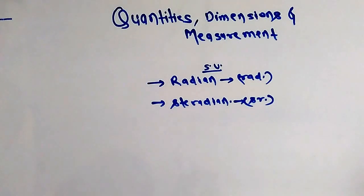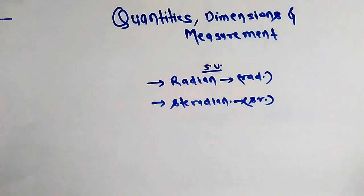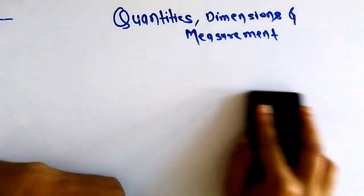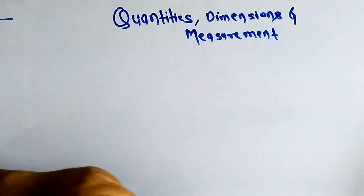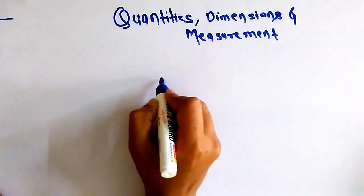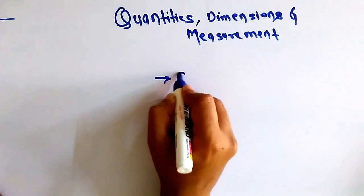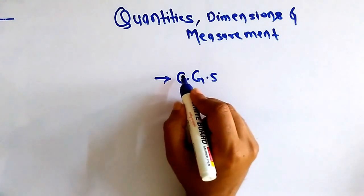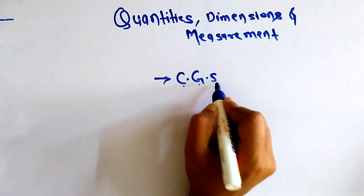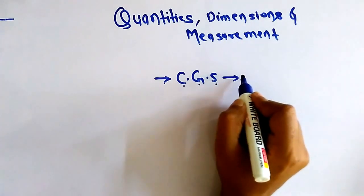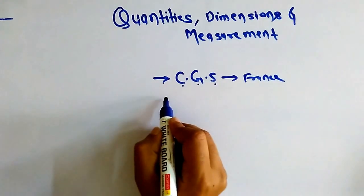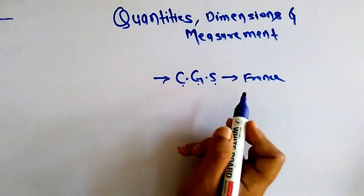Now let me explain something regarding systems of units. There are four systems: one is known as CGS — centimeter, gram, second — which was set up in France. Another one is FPS — foot, pound, second — whose setup took place in Britain.